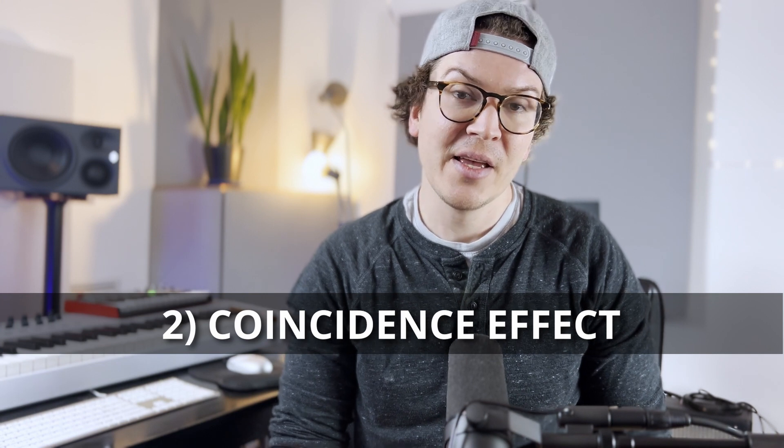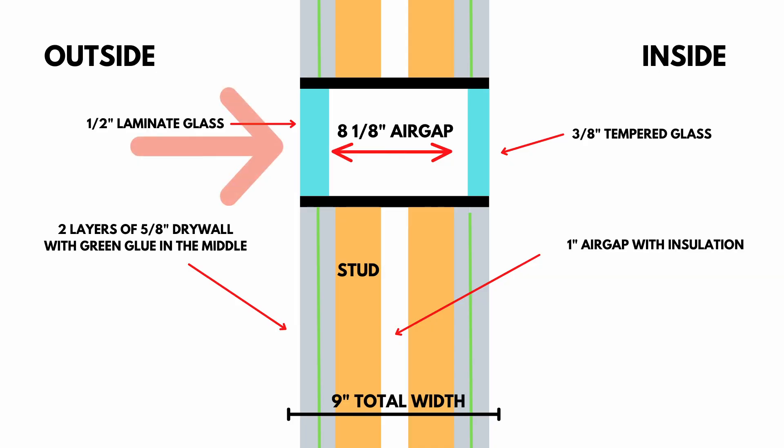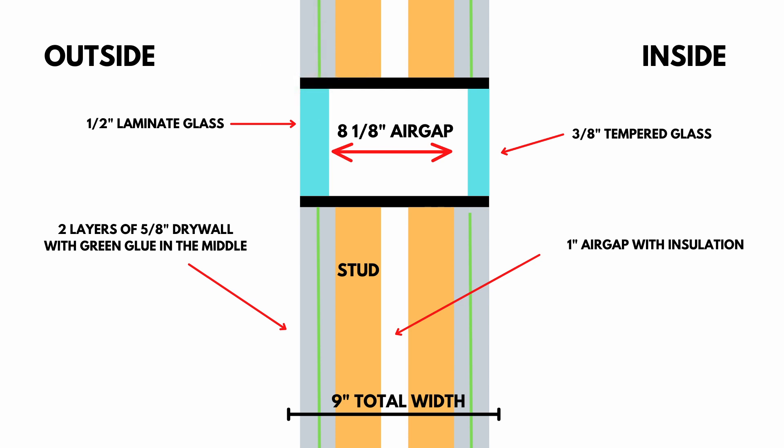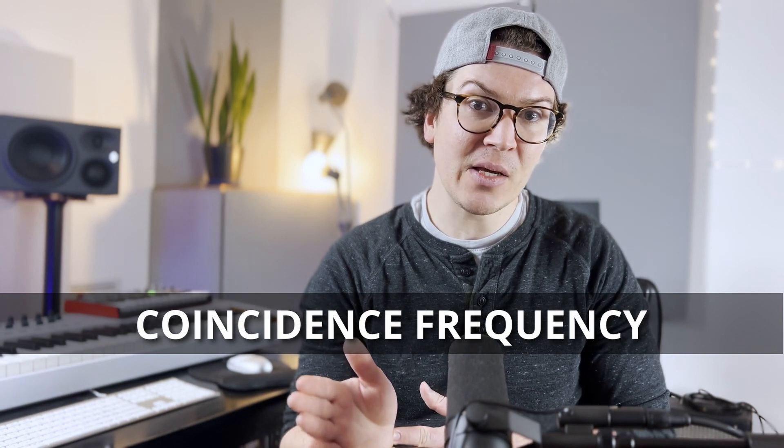Now let's talk about the second acoustic hole: the coincidence effect. The coincidence effect is when sound waves traveling from outside your studio hit the glass, and the speed of the sound wave hitting the glass matches the speed of the resonant frequency of waves in the glass. This creates a phenomenon where at that specific frequency, sound will move through the glass more readily than at other frequencies. Every pane of glass has a coincidence frequency where that frequency passes through more easily, creating an acoustic hole — meaning you'll hear that specific frequency more readily than others.